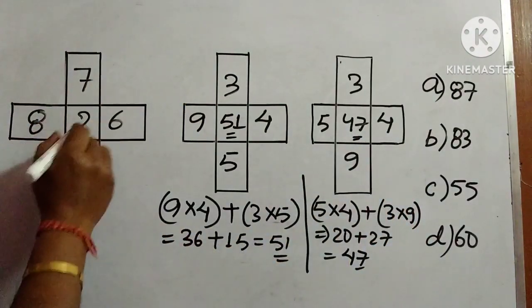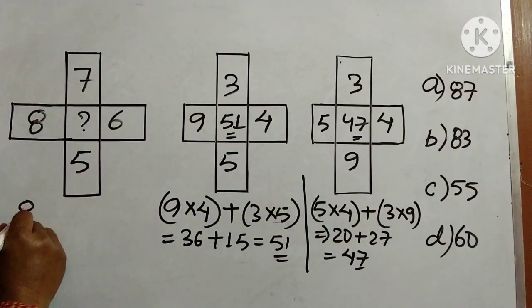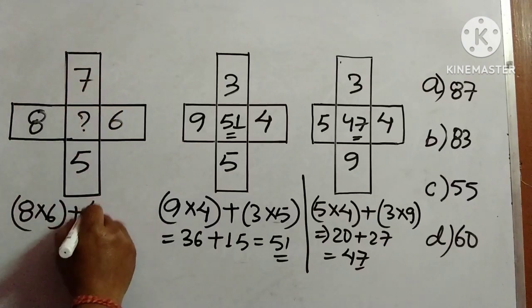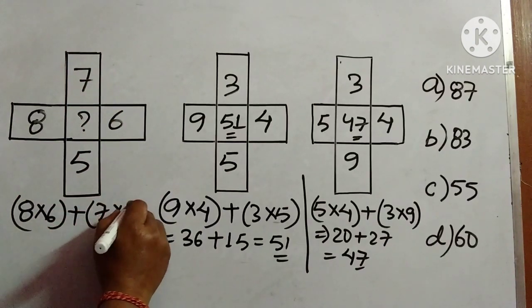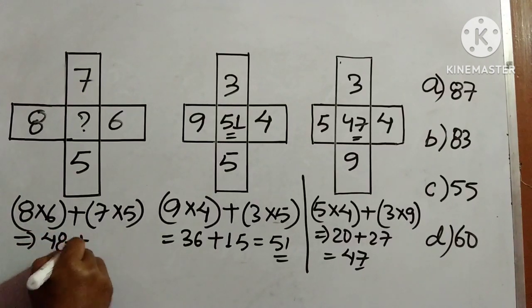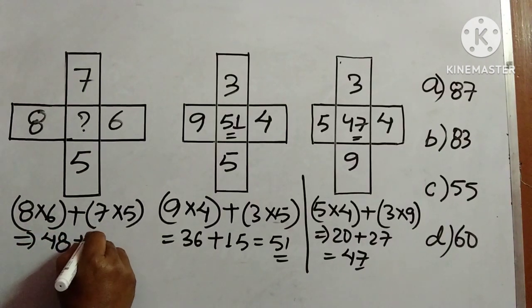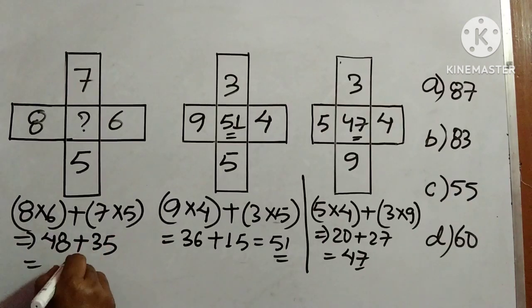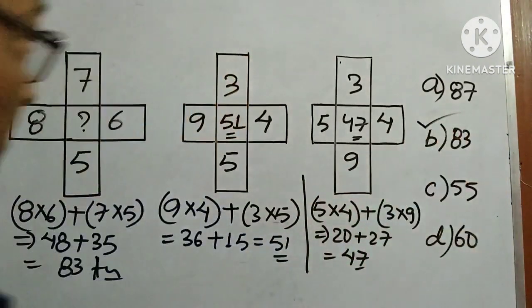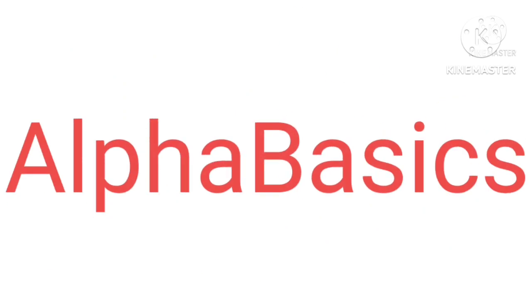So we have to follow the same pattern. What we have to do, we will multiply 8 and 6, these two numbers, and put the sign of addition, and then multiply 7 and 5. So 8 into 6 is 48 plus 7 into 5 is 35. So now add, it comes to 83. So 83 is the answer. Answer is option B. That's all for today. Hope you have understood. Thanks.